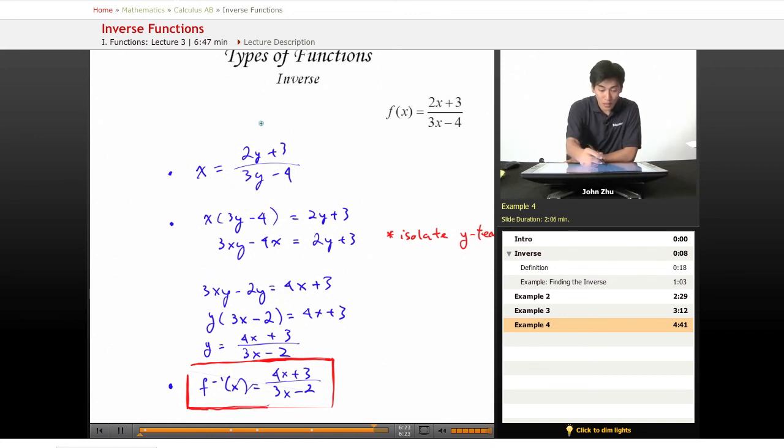Step 1, we swap x and y in our original function. Step 2, solve for y. Then replace that y term with f inverse of x.